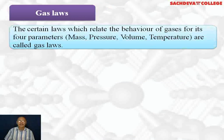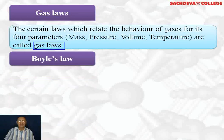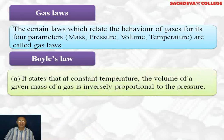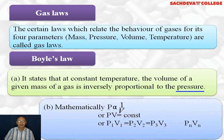Gas laws are certain laws which relate the behavior of gases through four parameters: mass, pressure, volume, and temperature. The first law we are going to take up is Boyle's law. It states that at constant temperature, the volume of a fixed mass of a gas is inversely proportional to its pressure.